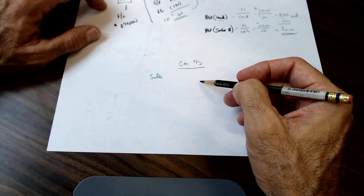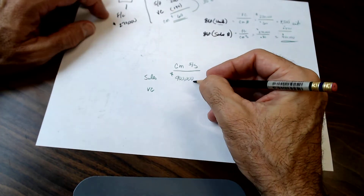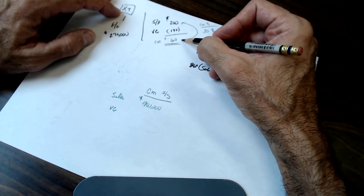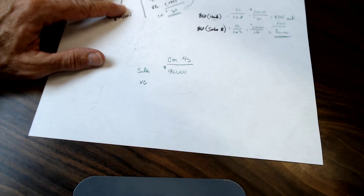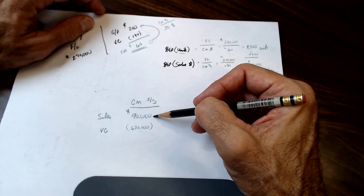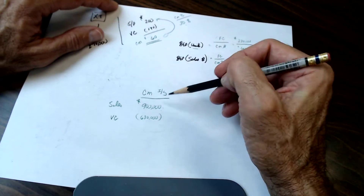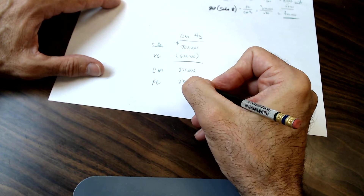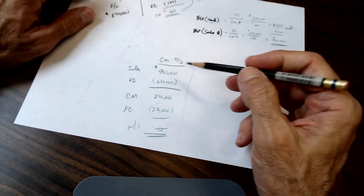Sales at the break-even point would be $900,000. Variable costs: they're running 70% of sales — that's why the contribution margin (what's left) is 30%. So 70% of $900,000 is $630,000 in variable costs. Or: the break-even of 4,500 units at $140 each also equals $630,000. So the contribution margin is $270,000. Fixed costs are $270,000. Therefore net income is zero. That's the contribution margin income statement.